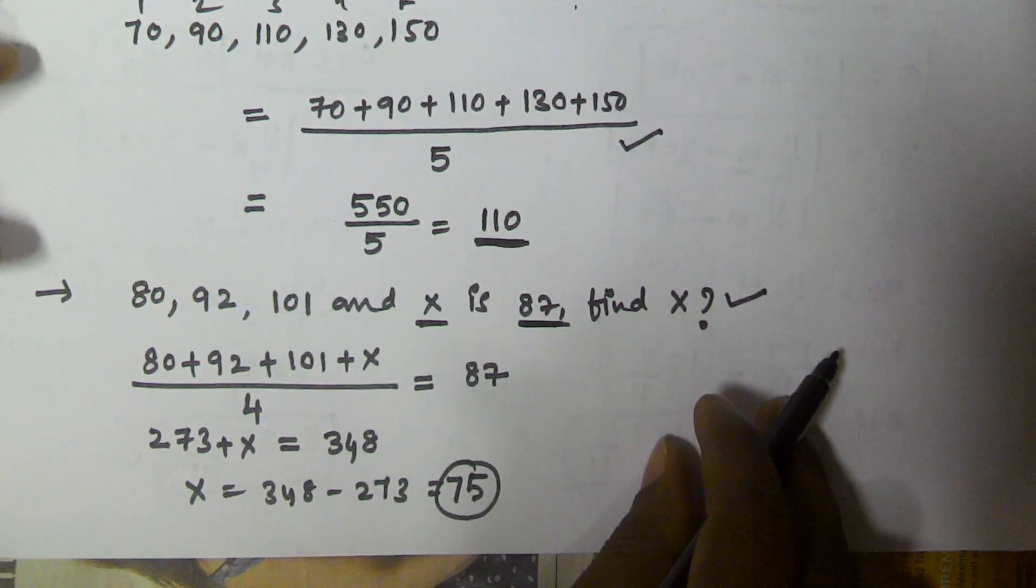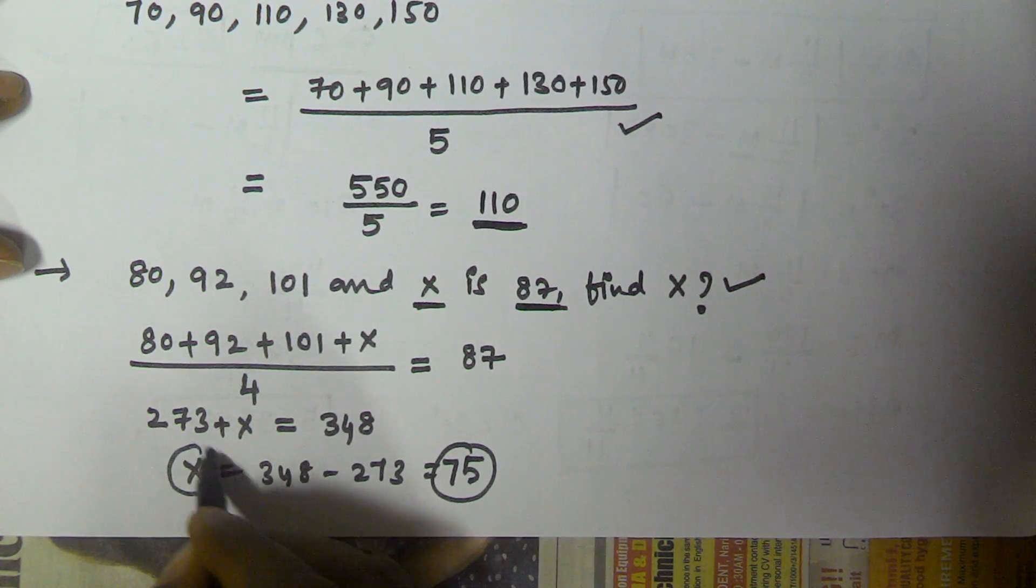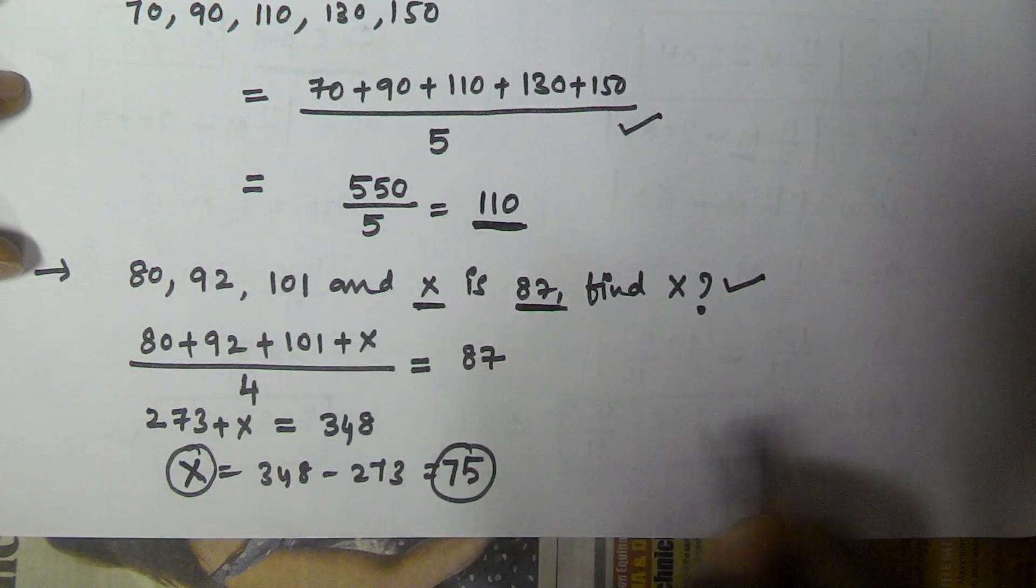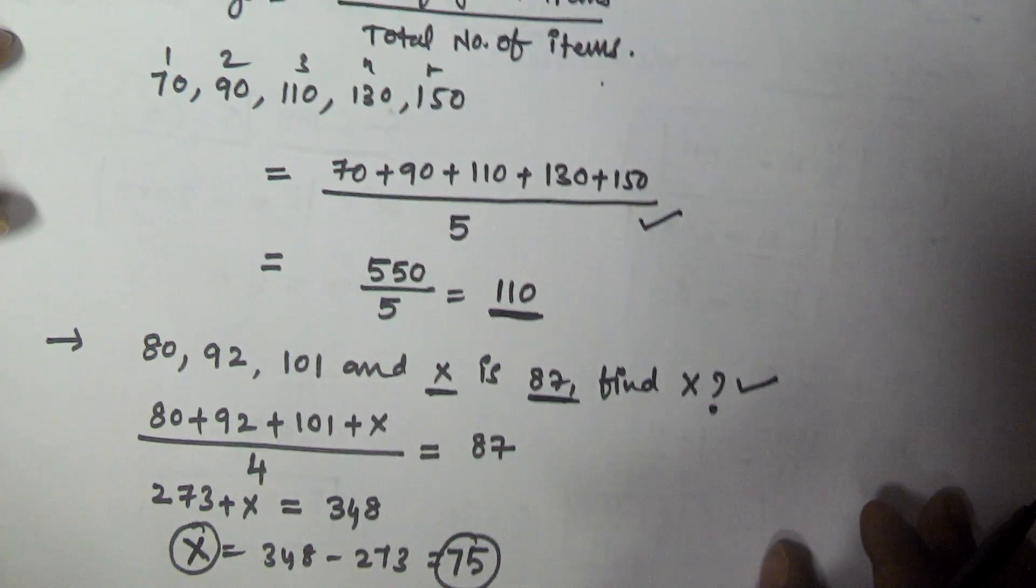In that example, four numbers are given where one number is unknown and the average is given. Based on that we find the unknown number in the given items list.